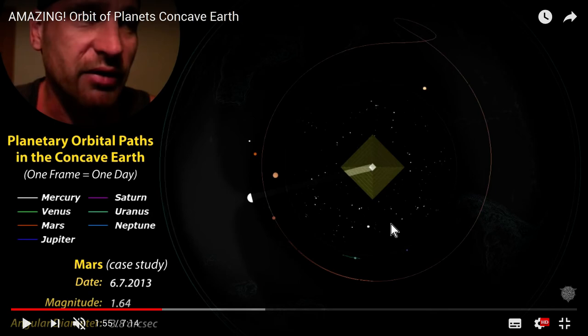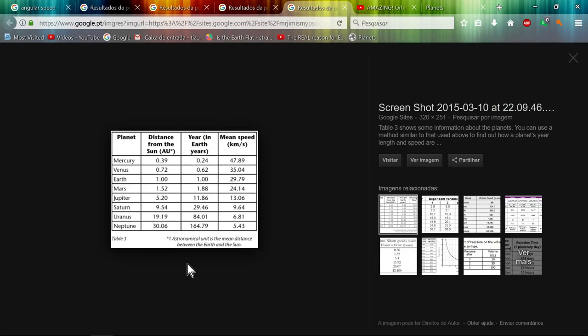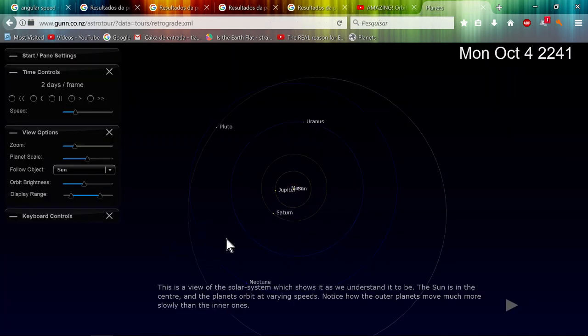Try to explain 84 years and 164 years in the concave model. It's impossible. I can guarantee you these two planets or bodies or whatever you want to call it, they move very slower comparing to these ones.